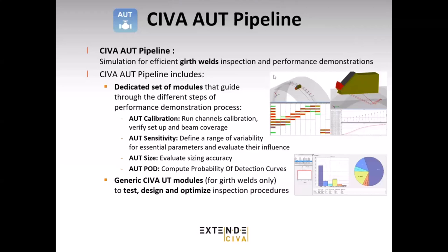The target of this tool is to model girth weld inspections and mainly to support performance demonstrations of girth weld inspections in pipelines. It comes with two ranges of tools: dedicated tools specific to these modules that are well-guided and will walk you through the performance demonstration process step by step — from simulating the calibration mockup to verify settings and channels, through to assessing essential variables via sensitivity analysis, and extracting sizing accuracy indicators and POD curve indicators.